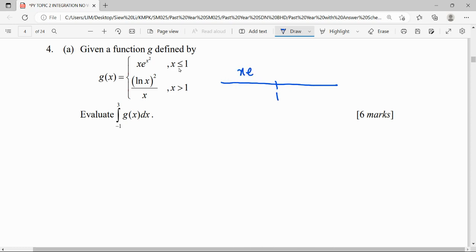For the interval with x less than 1, we know it will be the function x to the power of x squared. When x more than 1, it will be dealt with ln x squared over x.